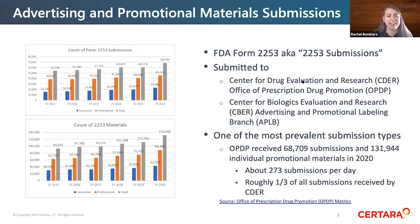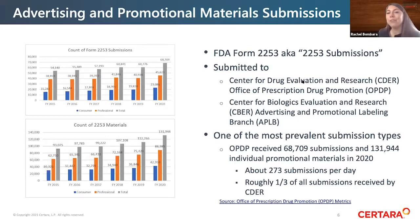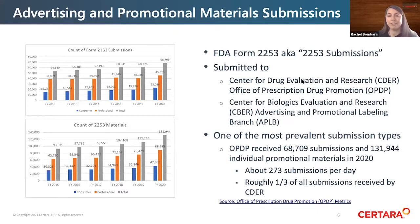When talking about advertising and promotional material submissions, these submissions have lots of nicknames — 2253 submissions, ad promo, advertising, and marketing — but we're all talking about sending your promotional materials to the FDA so they can be reviewed, whether it's the Office of Prescription Drug Promotion (OPDP) for CDER, or the Advertising and Promotional Labeling Branch (APLB) for CBER. It's one of the most prevalent submission types: OPDP received 68,709 submissions last year, roughly a third of all submissions they received.